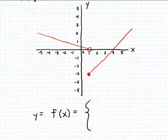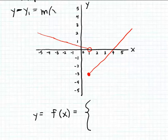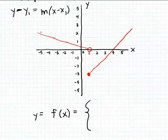We can do that by using the point-slope formula for writing down the formula for a line. The point-slope formula looks like this: y minus the y-coordinate of some point on the line equals the slope of the line times x minus the x-coordinate of that point. To use the point-slope formula we're going to need the slope of this line and a point on it — and to calculate the slope we need two points on the line.